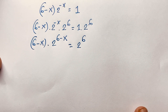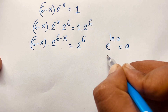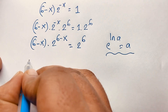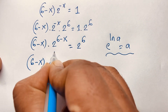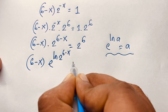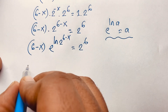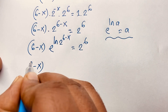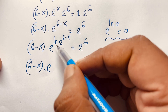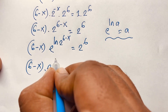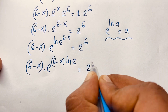We know that e to the power ln(a) is equal to a. According to this law, I can write (6 minus x) times e to the power [ln(2 to the power (6 minus x))] is equal to 2 to the power 6. Since the exponent can be brought in front, this becomes (6 minus x) times e to the power [(6 minus x) times ln 2] is equal to 2 to the power 6.